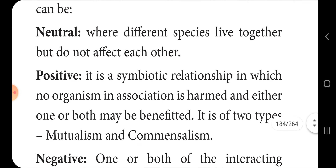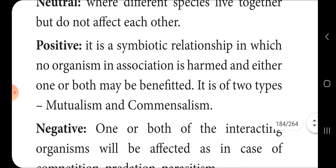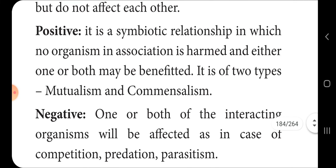Neutralism is when different species live together but do not affect each other. It is a symbiotic relationship with no benefit or harm to either organism. In a positive association, either one or both species may be benefited. There are two types: mutualism and commensalism.